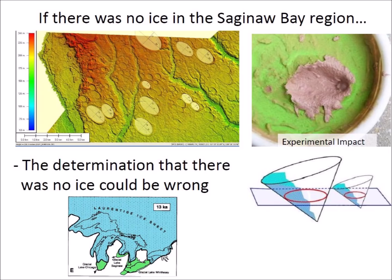Glacier coverage is inferred from moraines and evidence of glacial lakes such as sediments, beach ridges, and meltwater outlets. Isn't it possible that an extraterrestrial impact by a meteorite with a diameter of 3 to 4 kilometers could have destroyed the evidence needed to establish the presence of an ice sheet at the point of impact?